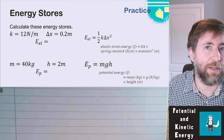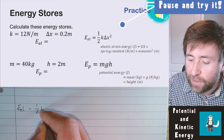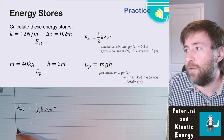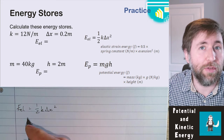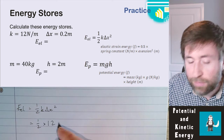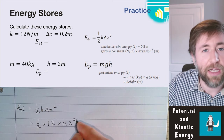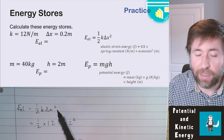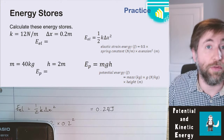Let's do some practice calculations. Always start by writing out the equation, then check you're using SI units. For elastic potential energy: one-half times 12 newtons per meter times the extension in meters — that gives 0.24 joules.